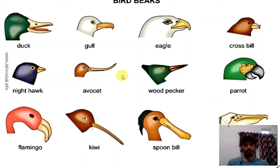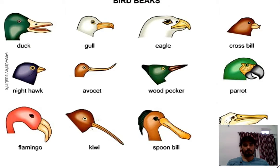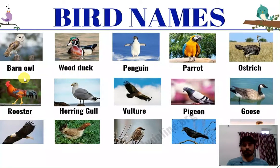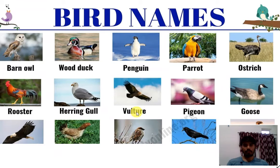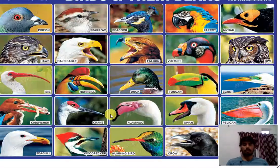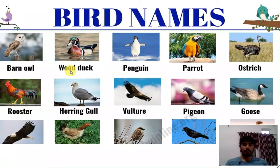In all the birds, you will see differences in their beaks. This is crossbill, this is eagle, gull, duck. This is another picture of birds: grand owl, wood duck, penguin, parrot, ostrich, rooster, herring gull, vulture, pigeon, goose. In this picture every bird has a different size, different colors, different feathers, different beaks, and different sounds also.